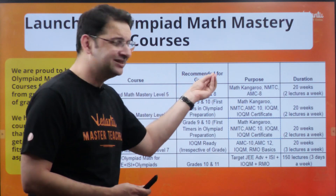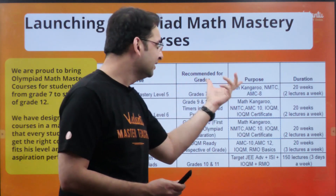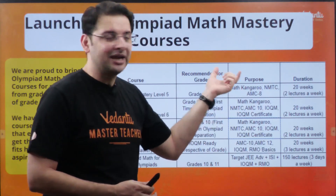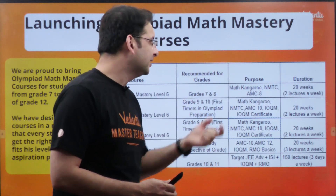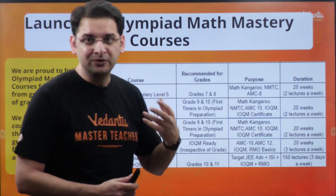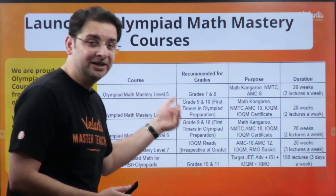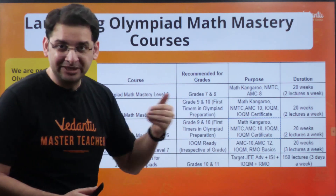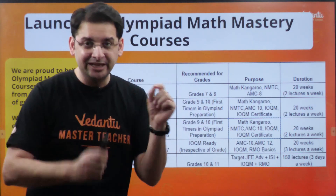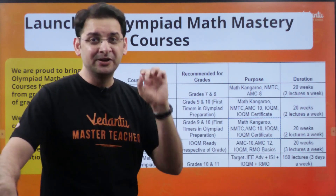Level 5 is primarily for seventh and eighth grade students. If you're looking at the final olympiad examinations, it can help you crack Mathematics Kangaroo, NMTC, and AMC 8. The duration is 20 weeks, two days a week. Olympiad Math Mastery Level 6 is primarily for students of class 9th and 10th.